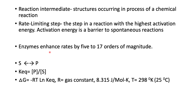We talk about the reaction intermediate — these are substructures occurring in the process of a chemical reaction. The rate-limiting step is the step in the reaction with the highest activation energy. The activation energy is a barrier to spontaneous reaction. You can get a spontaneous reaction, but you still have to have the activation energy, and the enzyme lowers this activation energy — though sometimes you still have to have an input of energy in order to facilitate this step to occur. Enzymes enhance reaction rates by anywhere from 5 to 17 orders of magnitude.